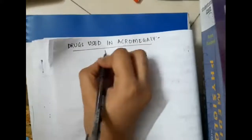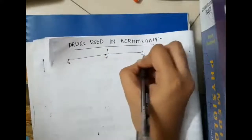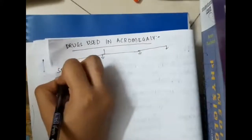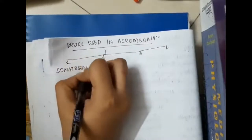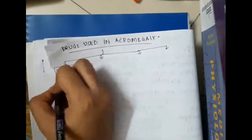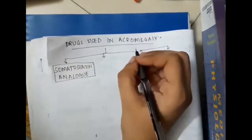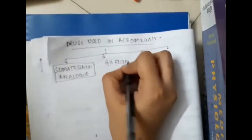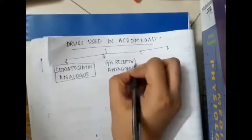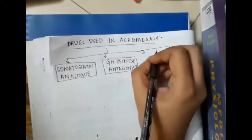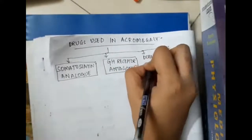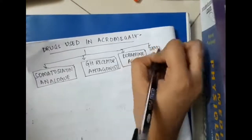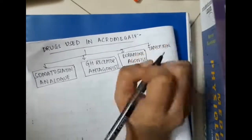Hello friends. Let us now learn some important points about the drugs which are used in acromegaly. These include somatostatin analogs, growth hormone receptor antagonists, dopamine agonists, and tamoxifen.